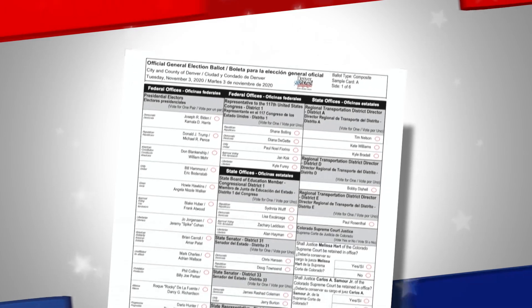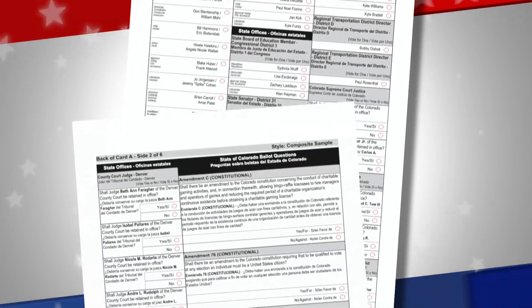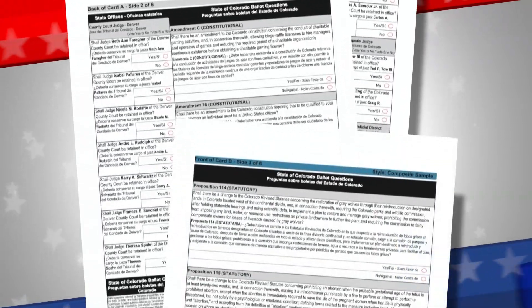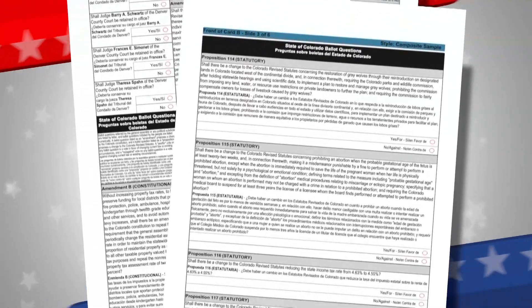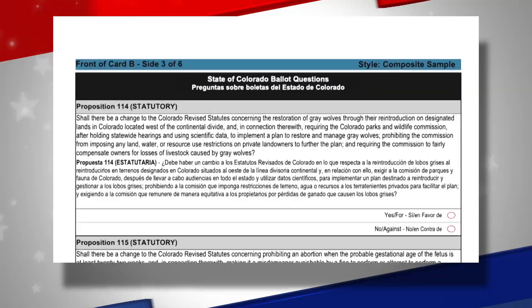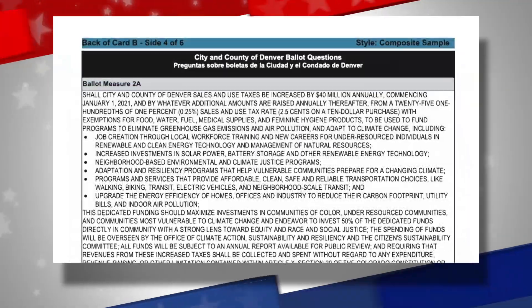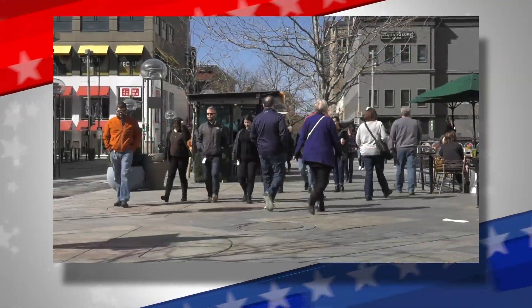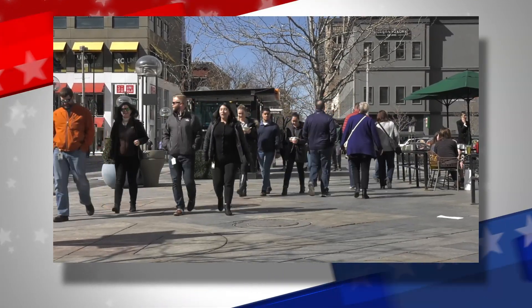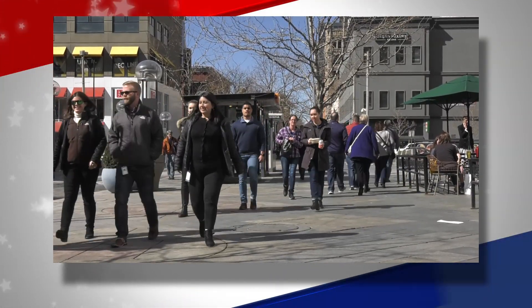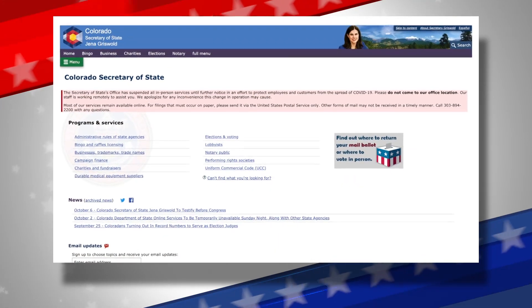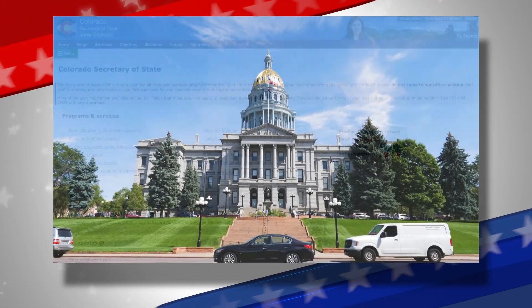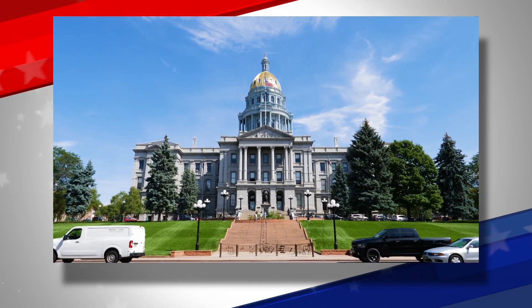This year's ballot is one of the longest in Denver's history, with a full 23 ballot questions, so you might want to get comfortable. We'll start with the ballot issues. There are several statewide and citywide questions on the ballot. Several of these issues are citizen-initiated measures, meaning citizens gathered enough signatures on a petition, which were then certified by the Secretary of State and placed on the ballot. The other issues were referred to voters by the legislators.